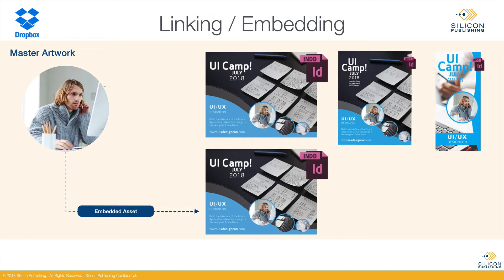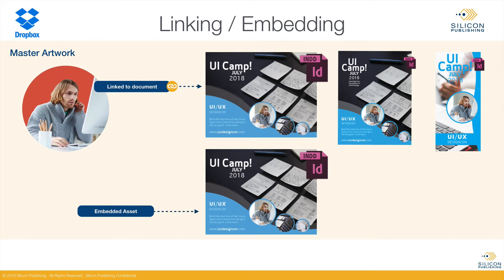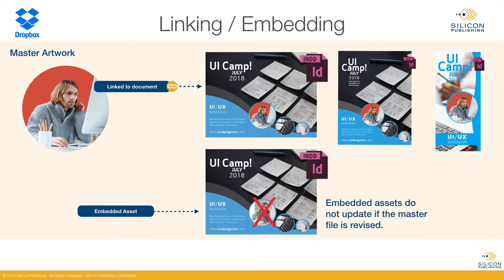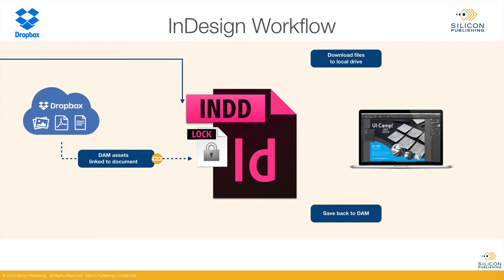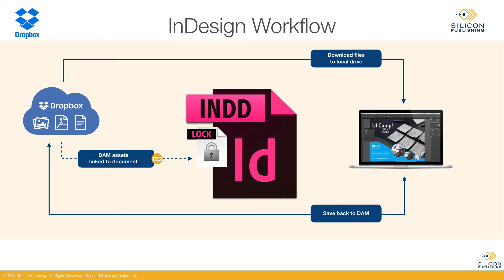As you can see, when an image is changed in the digital asset management system — the DAM — every instance is automatically updated in Adobe documents. This is true for every document using that image. Silicon Connector for Dropbox also lets you download your files to your local drive then save that back to the DAM. Assets are linked to the document in real time.